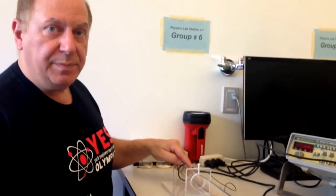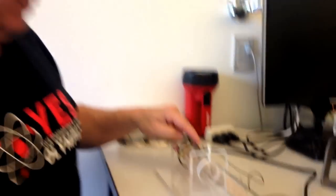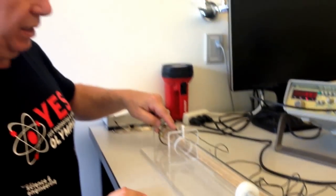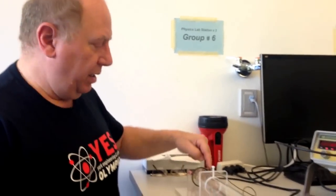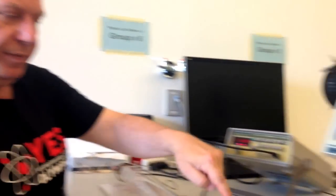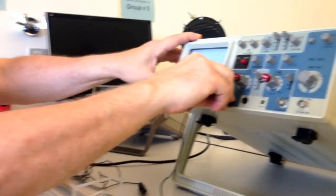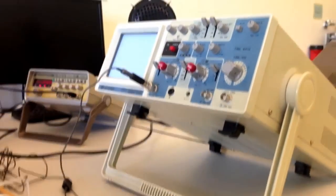This microphone here that's positioned at the open end of the glass tube will take the sound energy, convert it into electrical energy, and we will display this electrical energy or voltage on the oscilloscope.